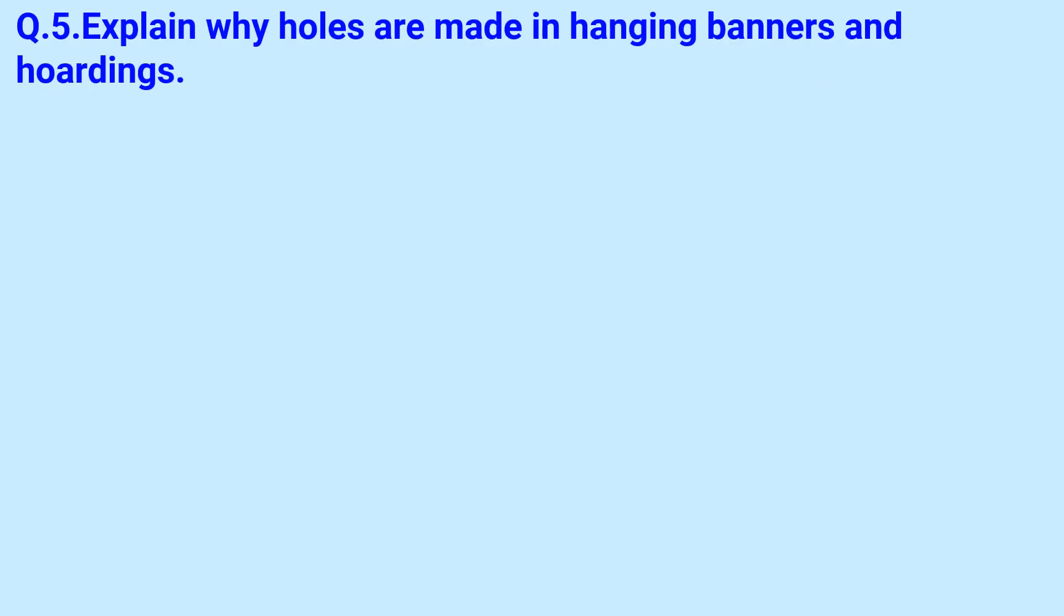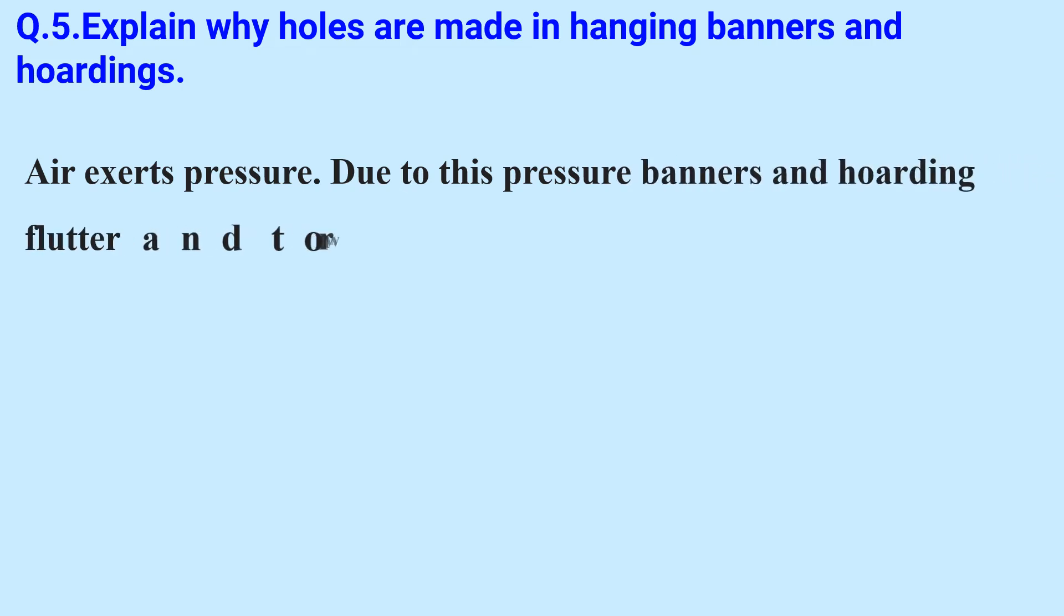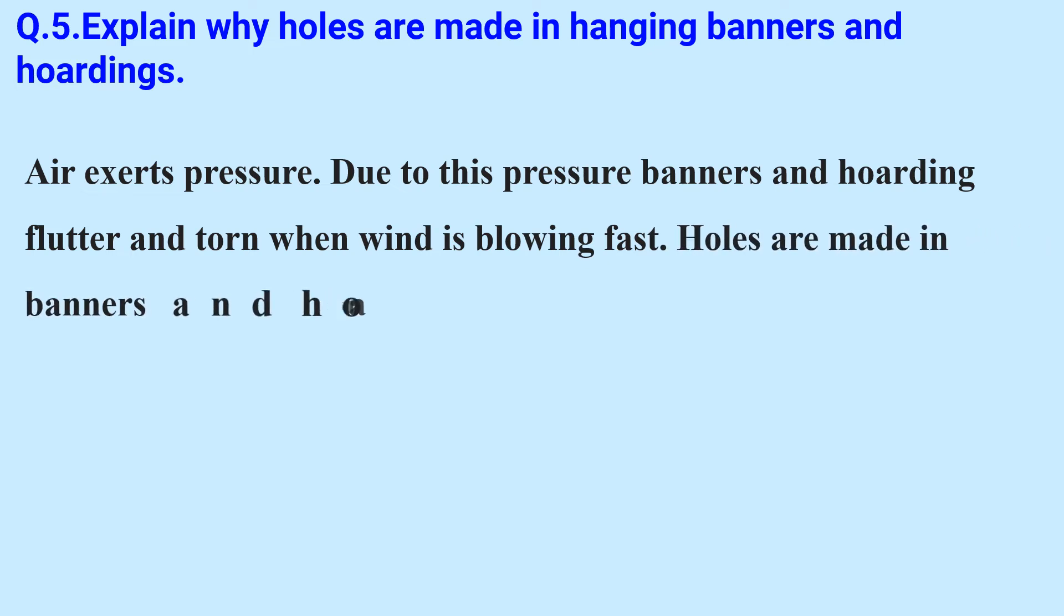Explain why holes are made in hanging banners and hoardings. Air exerts pressure. Due to this pressure, banners and hoardings flutter and are torn when the wind is blowing fast. Holes are made in banners and hoardings so that wind passes through the holes and they do not become loose and fall down.